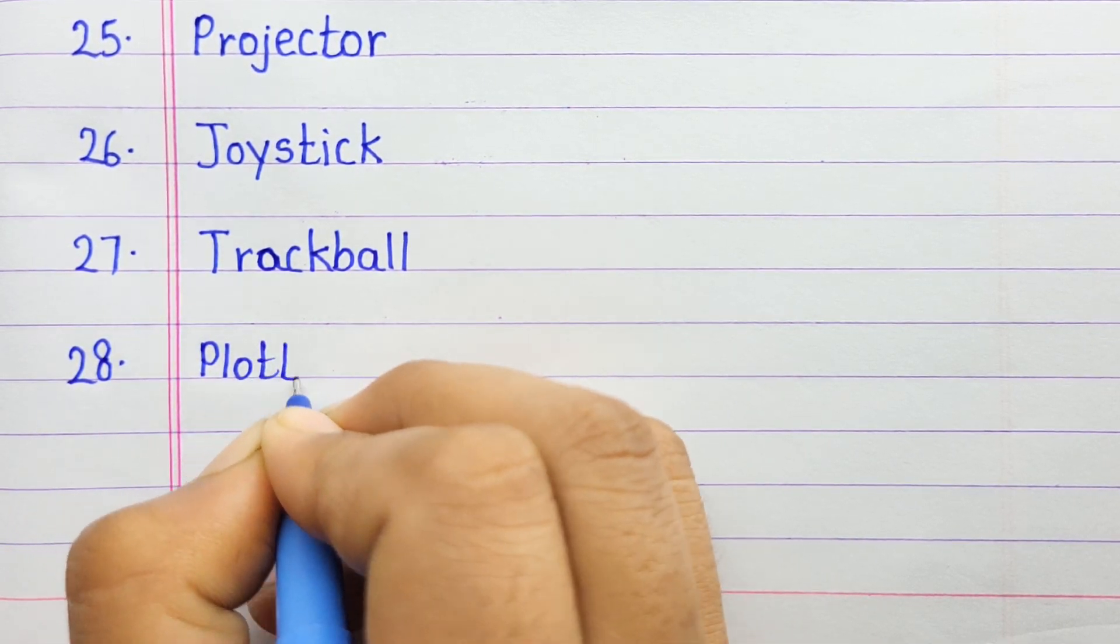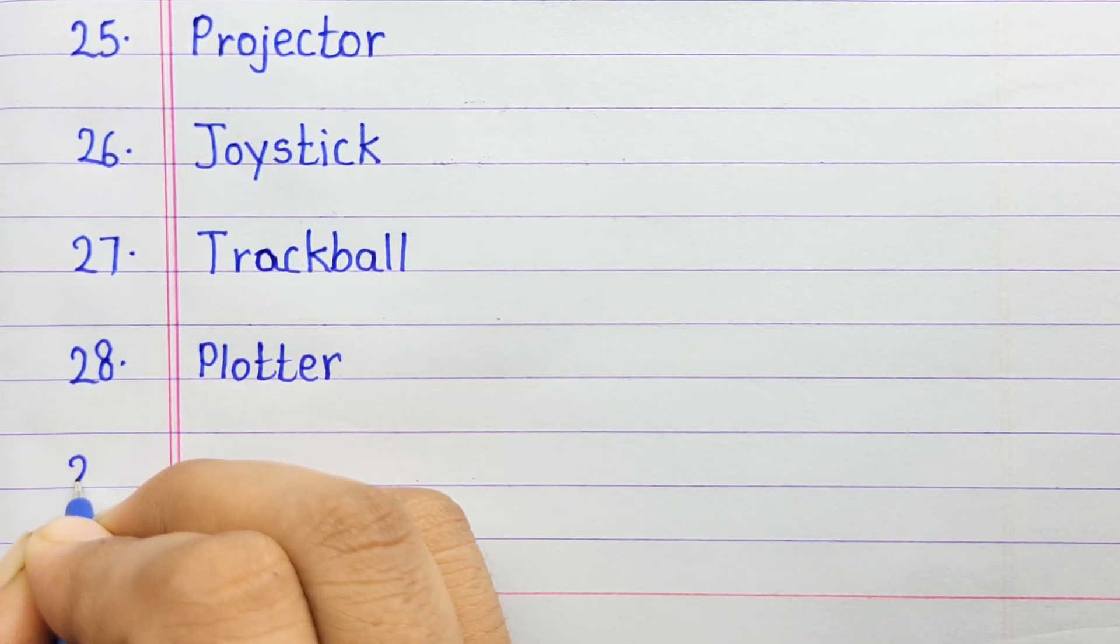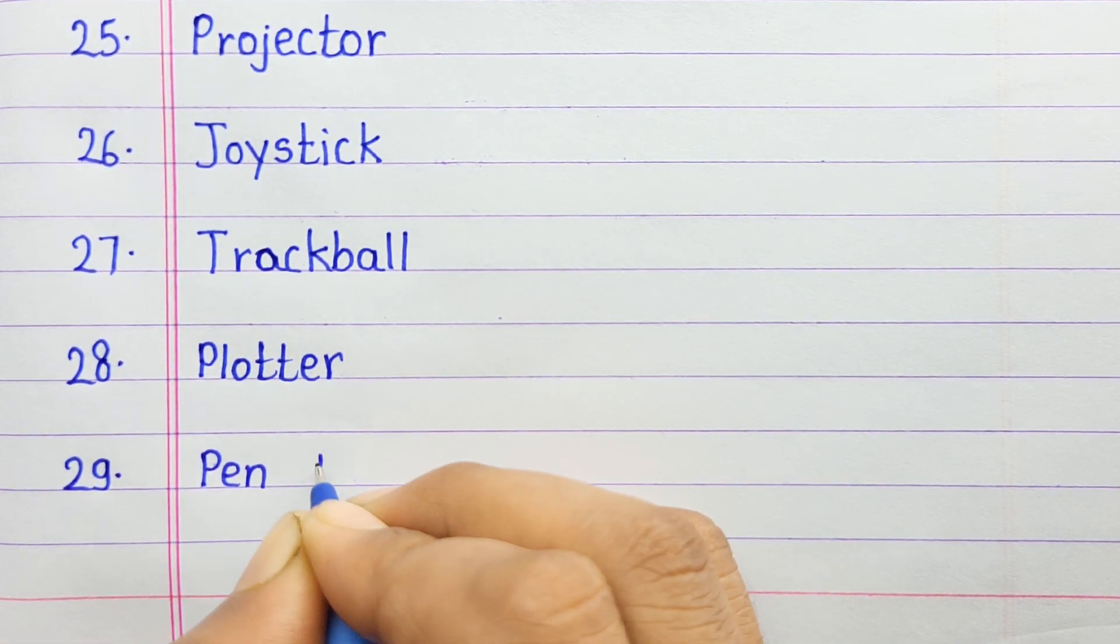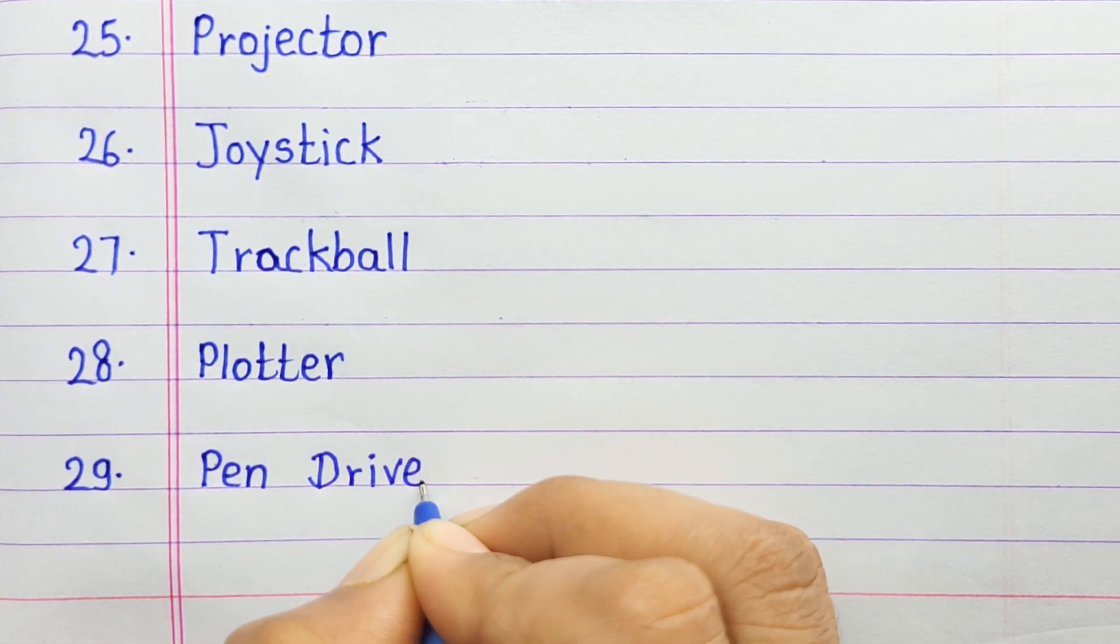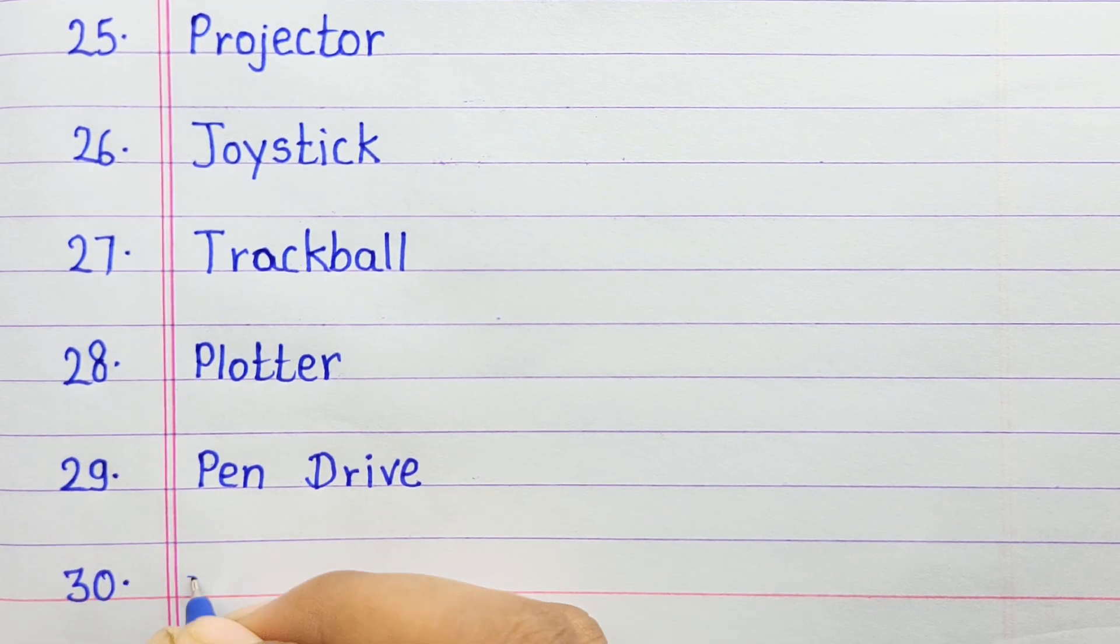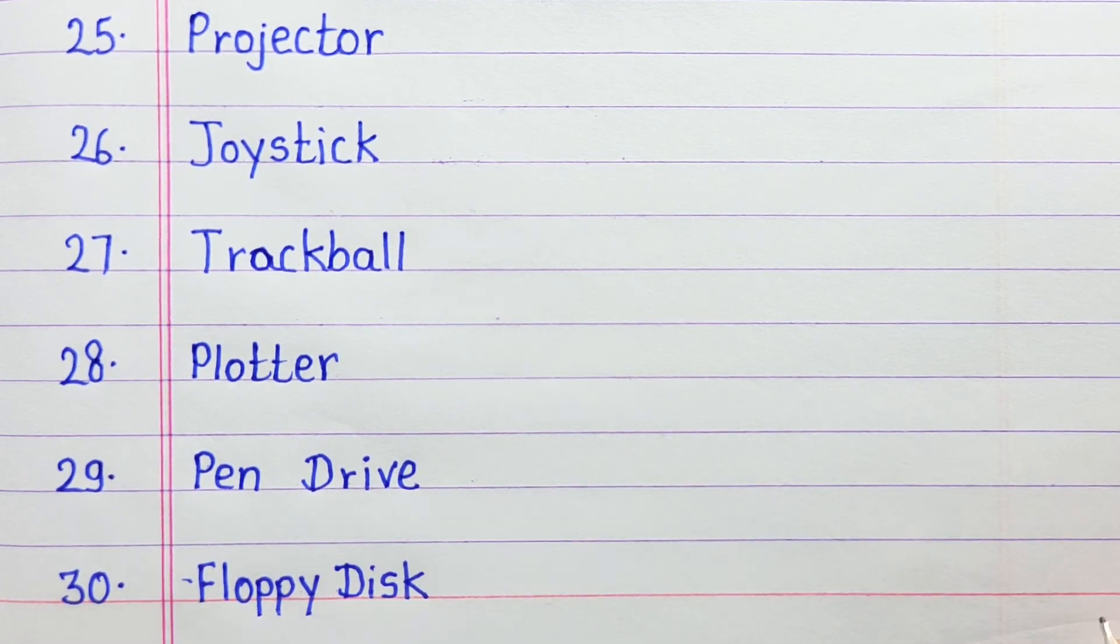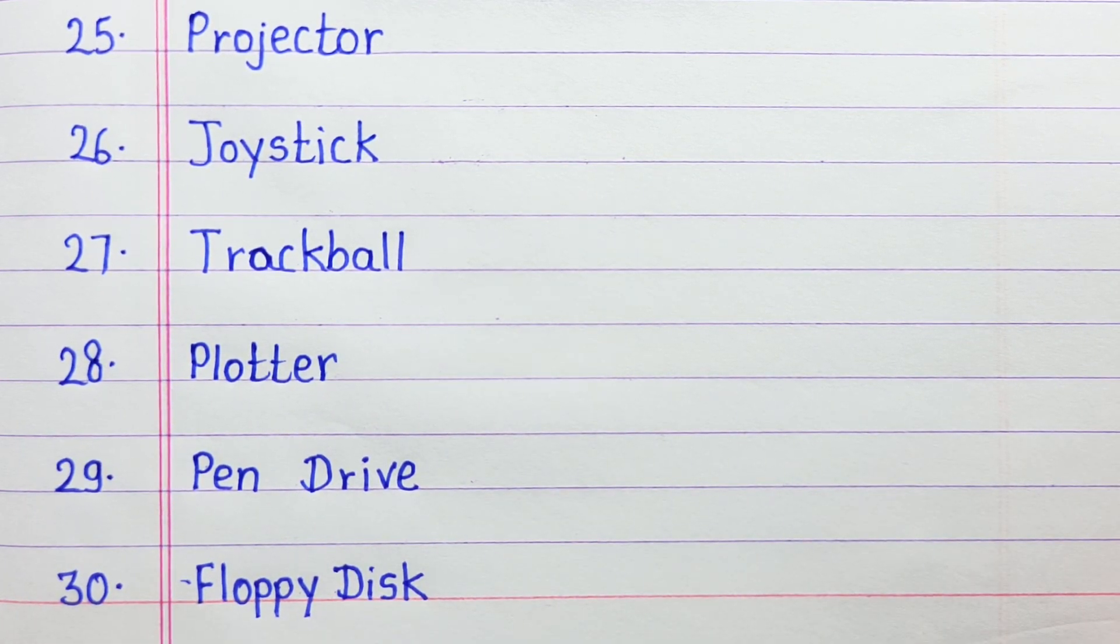Number twenty-eight: plotter. Number twenty-nine: pen drive. Number thirty: floppy disk. Friends, like this video and please subscribe my channel. Thank you.